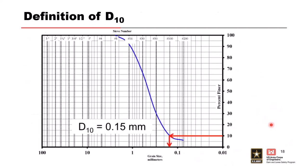D10 is the grain size at which 10% of the soil sample by weight is finer than that grain size. You plot your grain size analysis results, look at 10% finer, and go over. In this example, D10 is 0.15 millimeters — that's what you plug into the equations, making sure you're using the correct units since these are empirical equations.